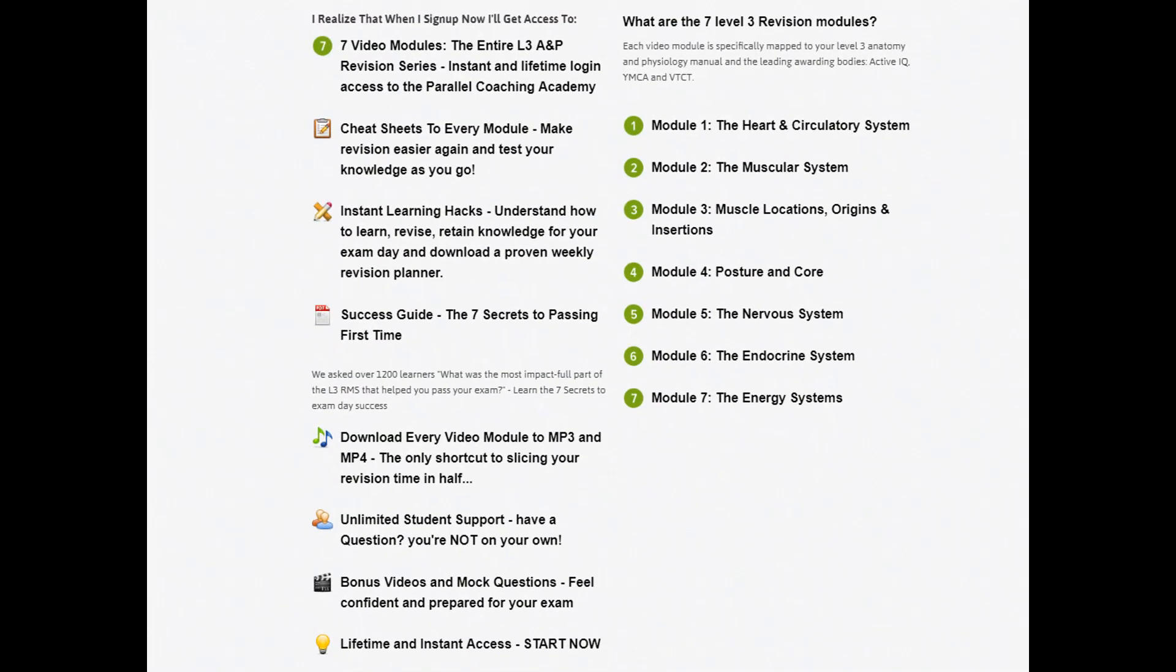Let's tell you a little bit more about our Revision Mastery series. You can see on screen that I have a list of things, and these are all what's included. Our Revision Mastery series is seven video modules. These are HD tutorials, and they make up the entirety of our Level 3 Anatomy and Physiology series. You get instant and lifetime login access to these modules. These modules include the heart and circulatory system, the muscular system, the muscle locations, origins and insertions, posture and core, nervous system, endocrine and energy systems. This is basically everything you need to know for your exam.